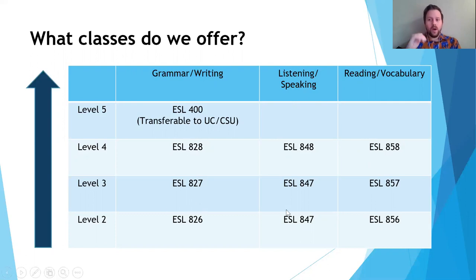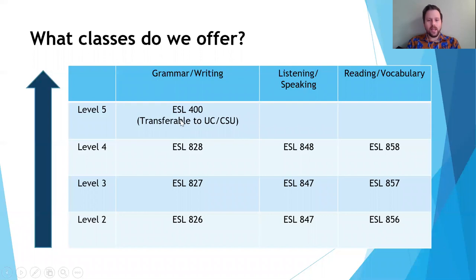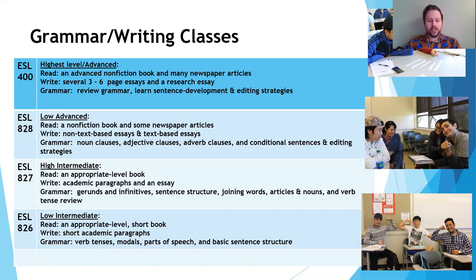Now let's talk about what is taught in each of these classes. For our grammar and writing classes, we have classes that range from low intermediate all the way to high advanced. Our ESL 400 class is a UC transferable course, transferable to UC and CSU, and this is the last class before students transfer to English 100 or English 105. If you start in our lowest level, ESL 826, low intermediate, you will read an appropriate level book and write short academic paragraphs. Some of the grammar you will study includes verb tenses, modals, parts of speech, and basic sentence structure.